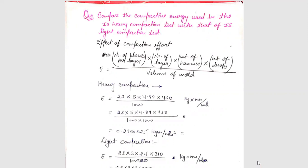The first numerical is compare the compactive energy used in the IS heavy compaction test with that of IS light compaction test. The IS heavy compaction test is modified proctor test and the IS light compaction test is standard proctor test. Now the effect of compactive effort.